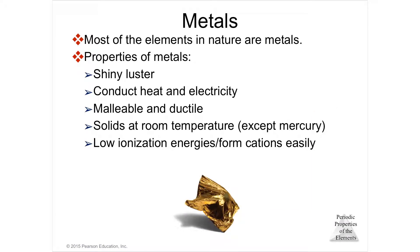Some properties of metals are that they're shiny — gold and silver are shiny. They conduct heat, so you can make a pan out of them. They conduct electricity, so you make wires out of them. They're malleable, meaning you can hammer them into sheets — you can make gold leaf and put it on a capitol dome. Ductile means you can pull them into a wire. They're solids at room temperature; mercury is the only exception, being a liquid at room temperature. Because they have low ionization energies, they form cations — they get their electrons stolen and become oxidized easily.